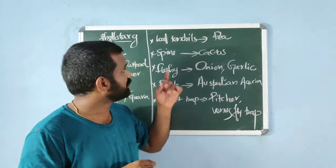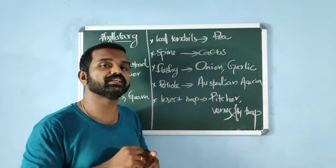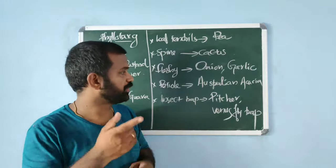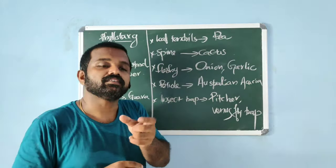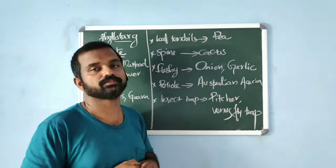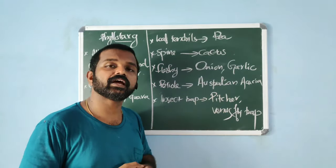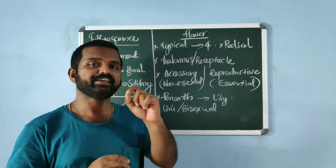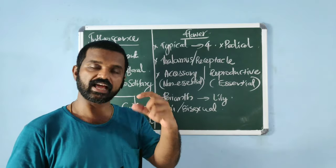Leaf modifications: leaf tendrils for climbing — seen in pea plant; leaf spines for defense — seen in cactus; fleshy leaves for food storage — seen in onion and garlic. In Australian acacia, petioles expand to perform photosynthesis because the lamina is small and short-lived — this modification is known as phyllode. Insectivorous plants like pitcher plant and Venus flytrap have leaves modified to capture insects.